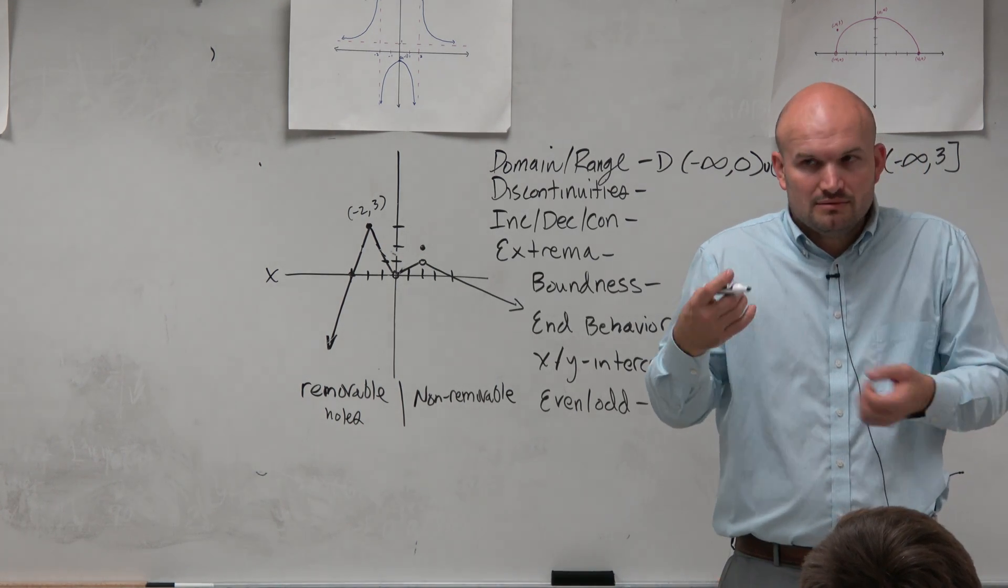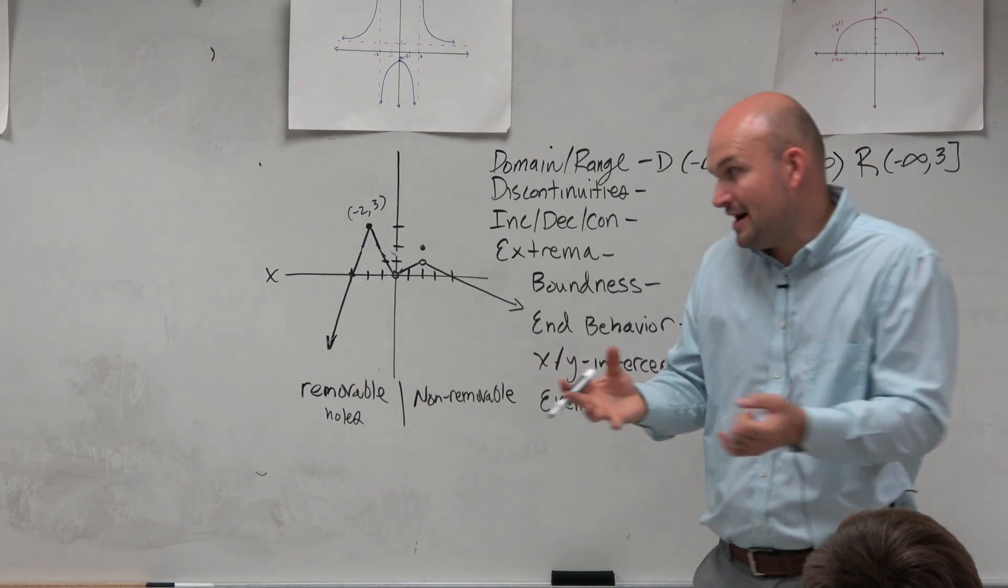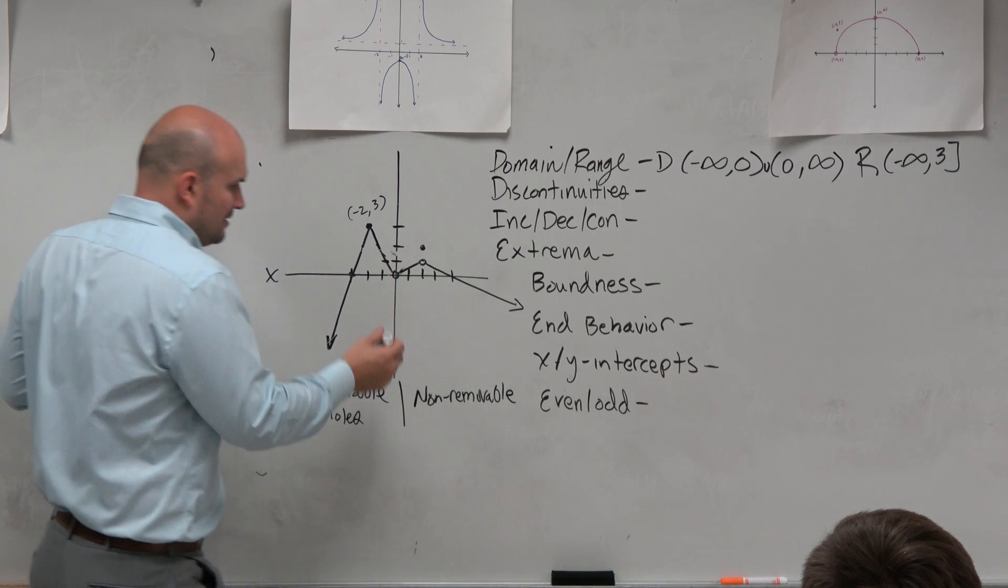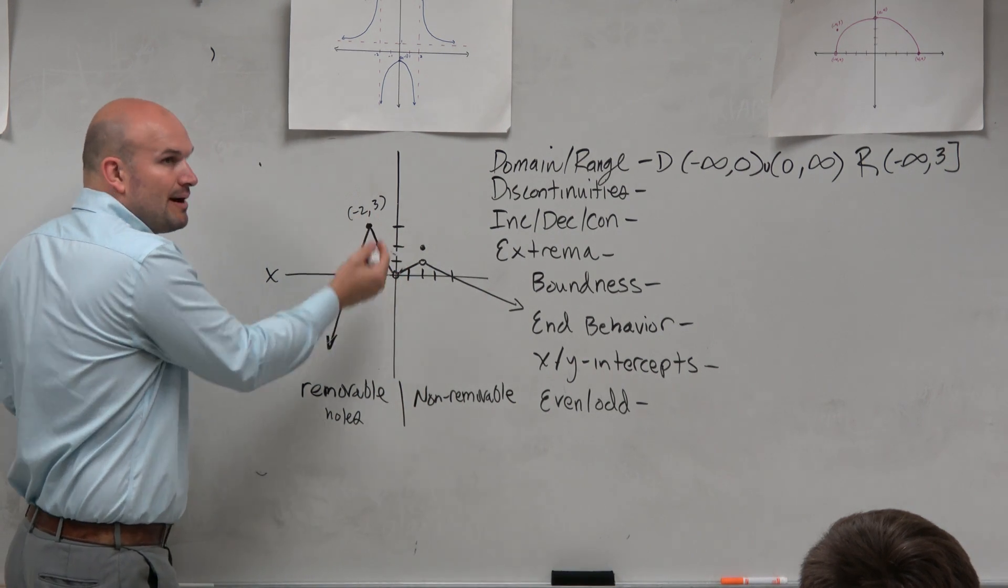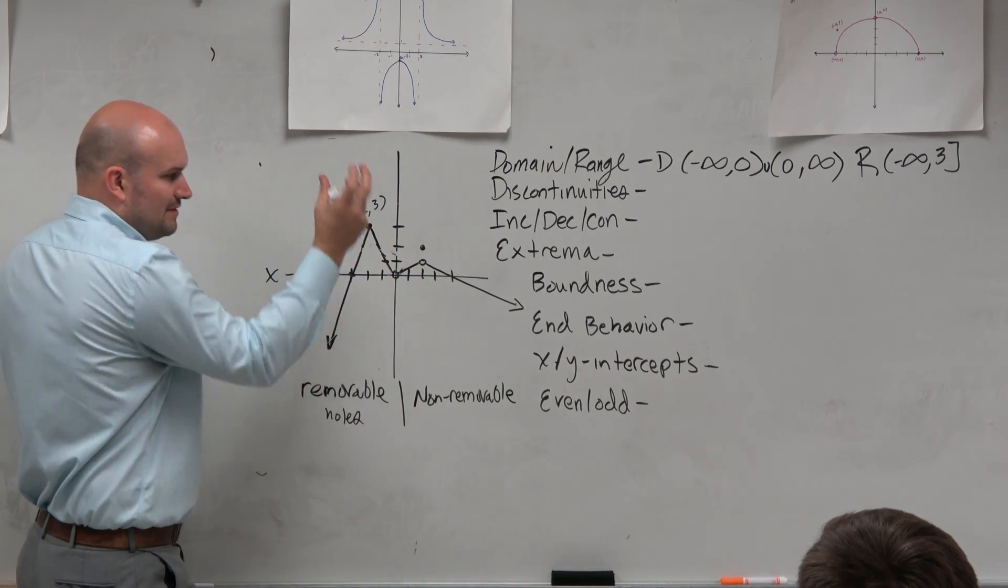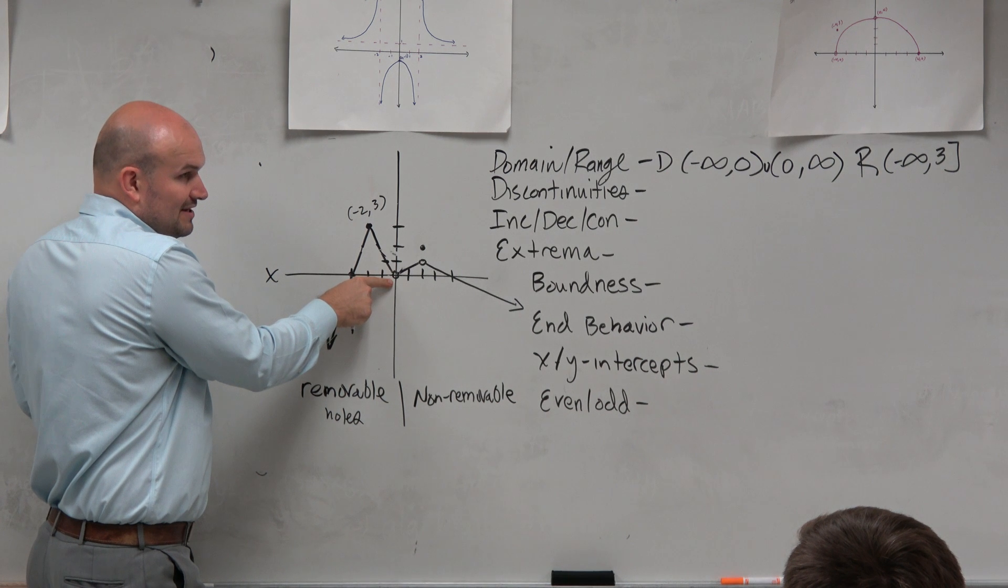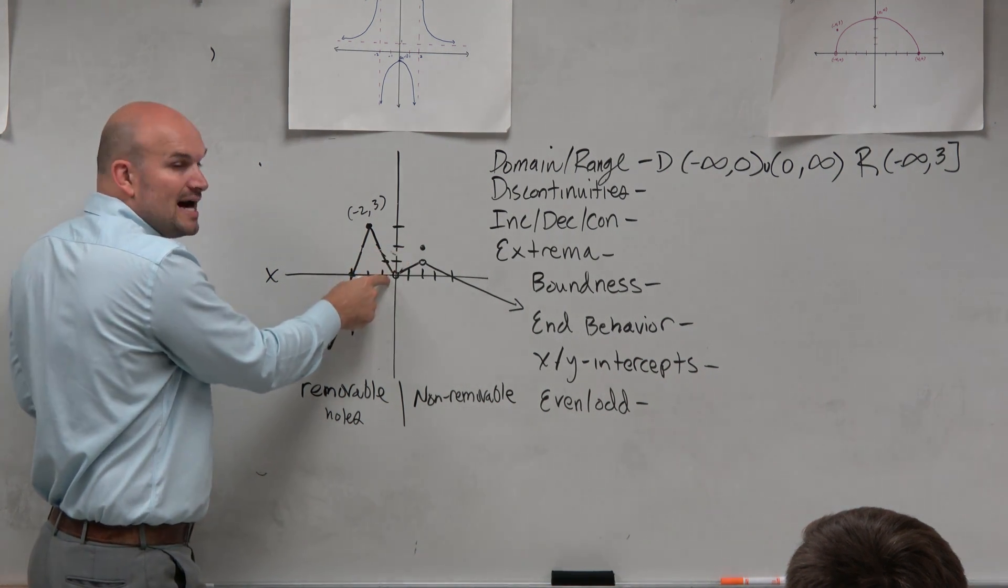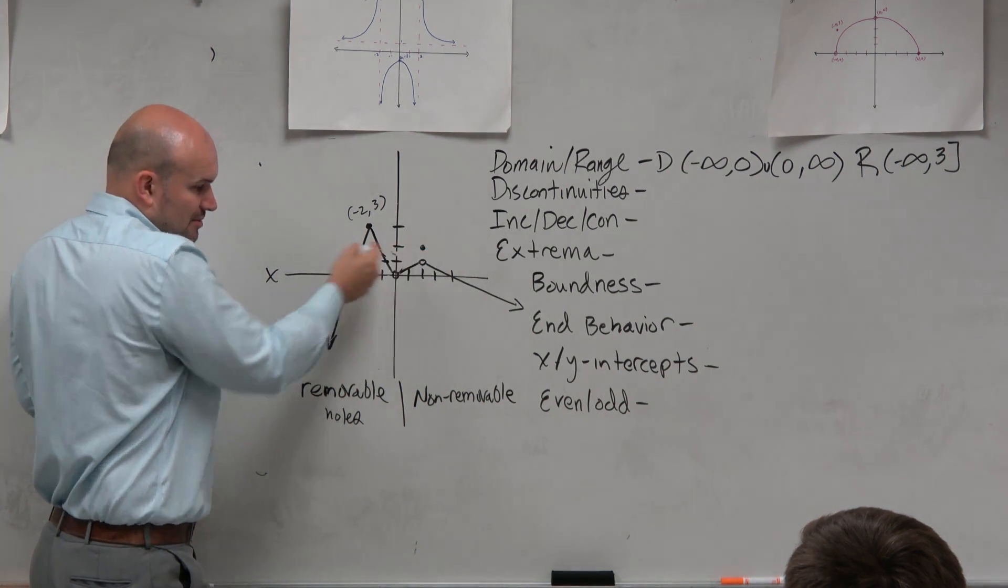And from a graphical approach, they're pretty easy to identify. They're basically just where you have a blank hole in the graph. So you have the regular graph and then there's a missing hole. You could have it with an included point or without an included point. It doesn't matter. These are both holes.